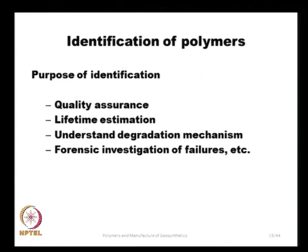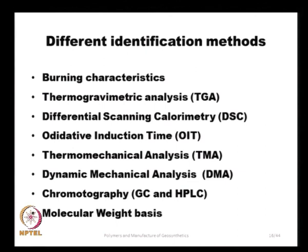How do we identify a given polymer? The purpose of identification includes quality assurance, lifetime estimation, understanding degradation mechanisms after installation in soil, and investigating causes of failure. There are various methods for identifying the type of polymer: burning characteristics, thermogravimetric analysis, differential scanning calorimetry, oxidative induction time, thermomechanical analysis, dynamic mechanical analysis, chromatography, and molecular weight methods.